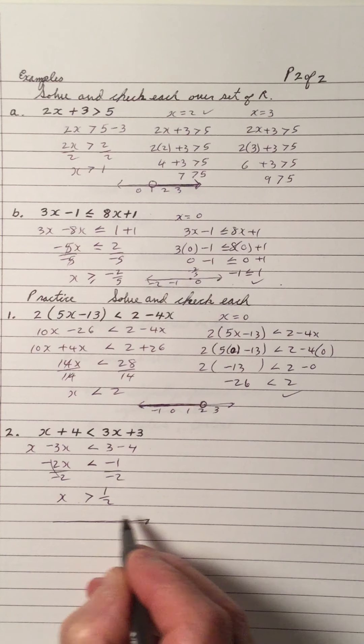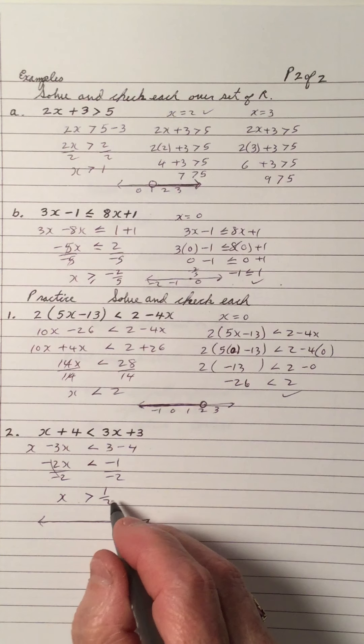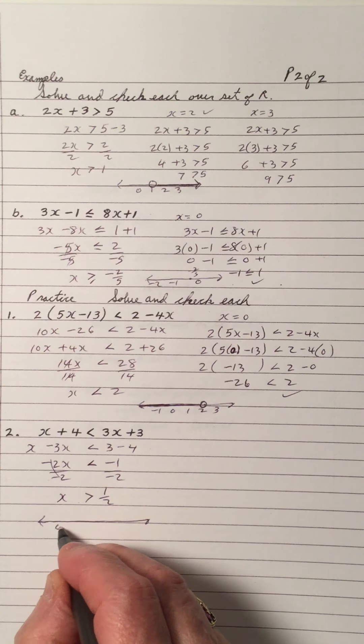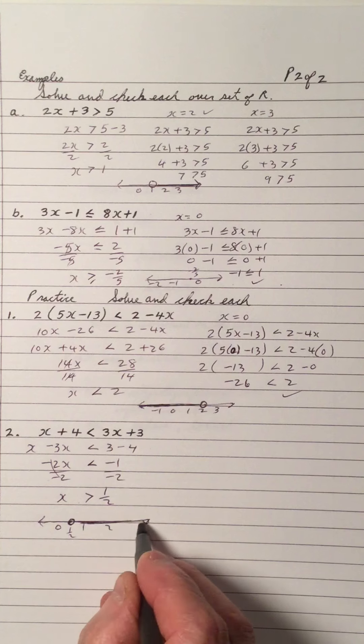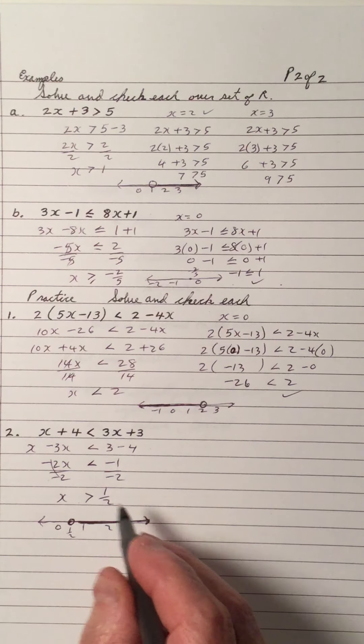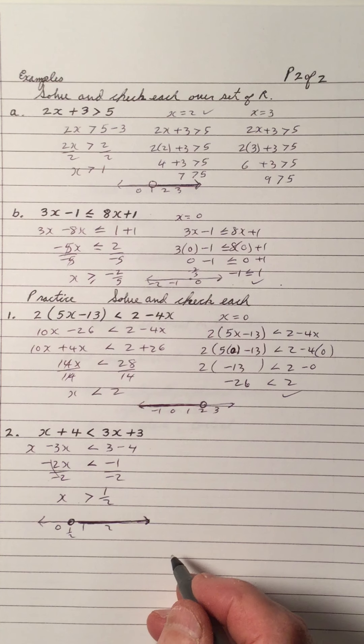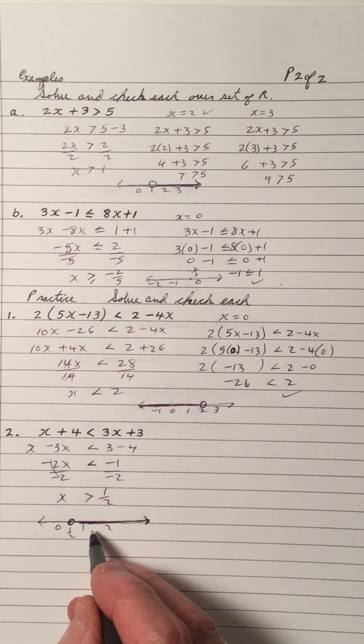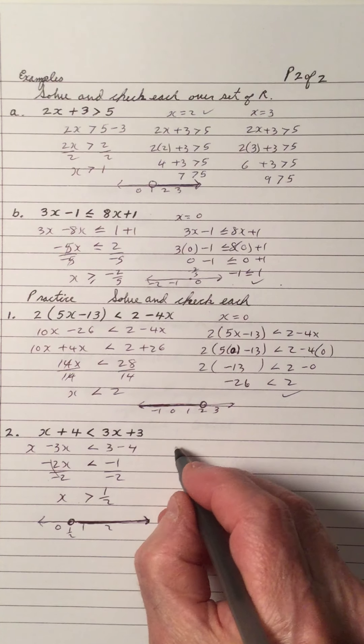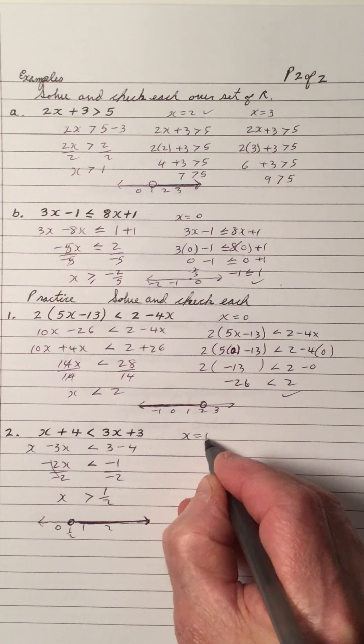And just to look at the graph, I have a half. So we got a 0, 1, and a 2. A half is roughly about there. But we can't have that as a hollow dot. That's a half. And we have the shade to the right. So any number to the right of a half will fit this inequality. So let's take to the right. Let's take a 1. We can take a 2, we can take a 3, we can take a 1 and a half. So let's take x equals 1.